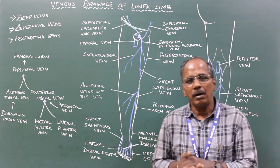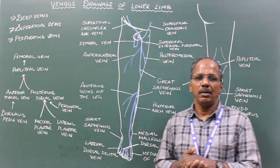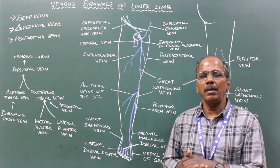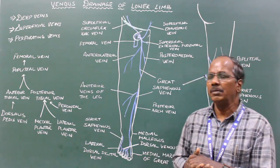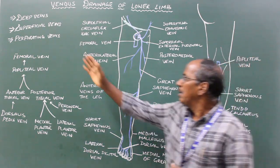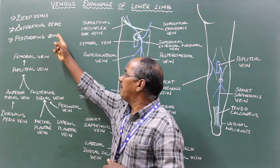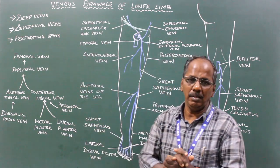Venous drainage of lower limb. The veins of the lower limb are divided into deep veins, superficial veins, and perforating veins.